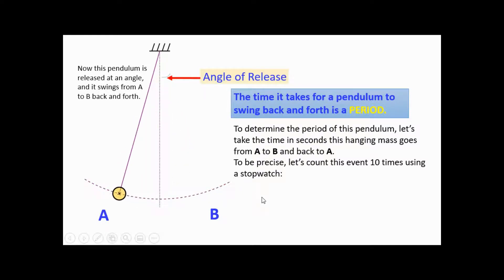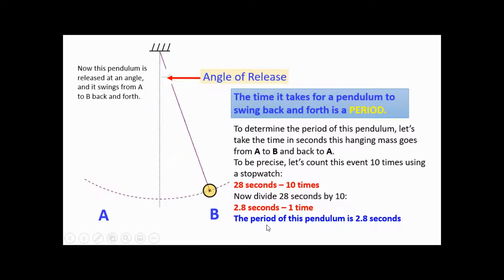Now we have approximately 28 seconds. So 10 swings is a total of almost 28 seconds. Now to find the time for one swing, we need to divide 28 seconds by 10. This is the period. So the period of this pendulum is 2.8 seconds.